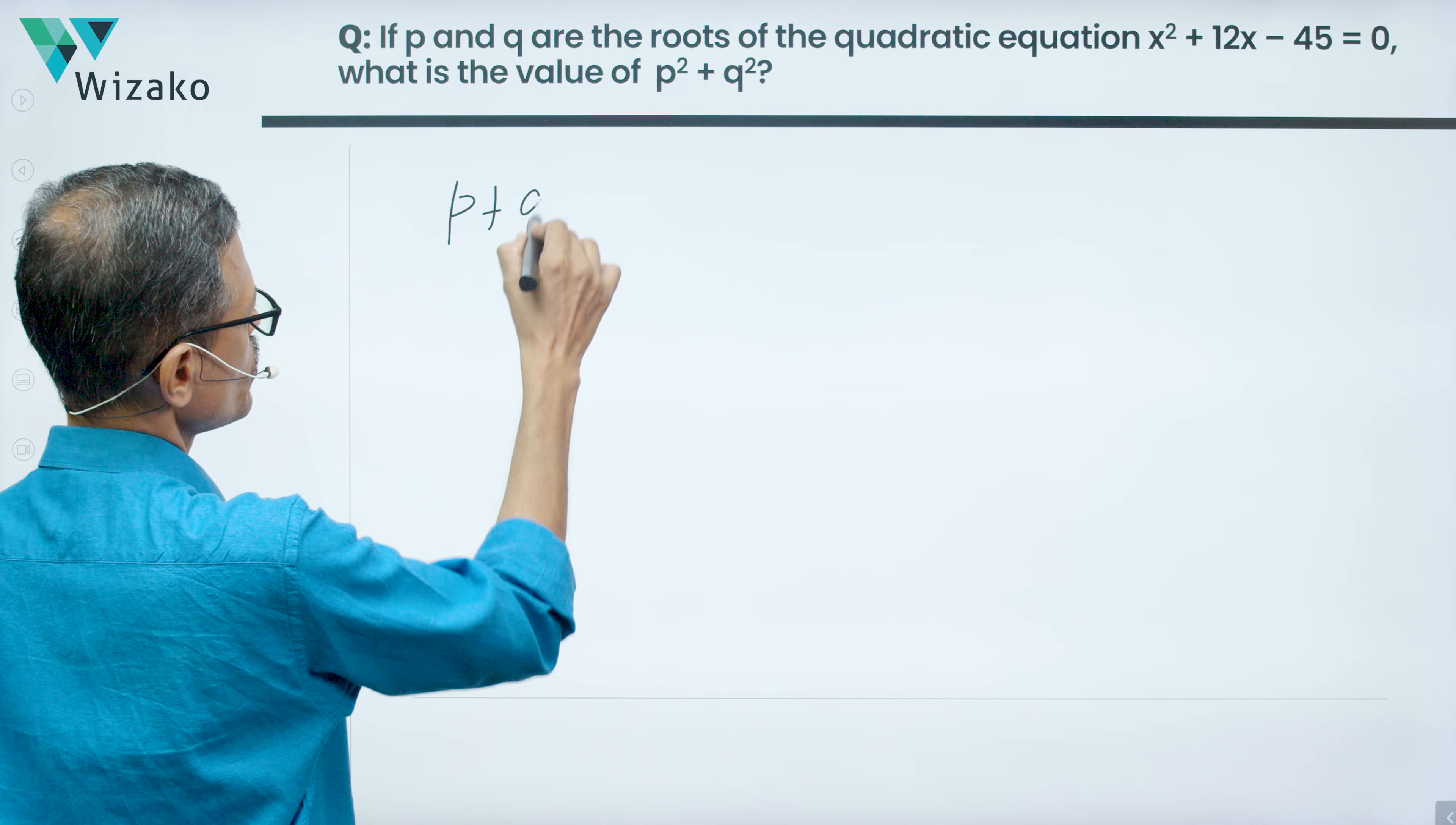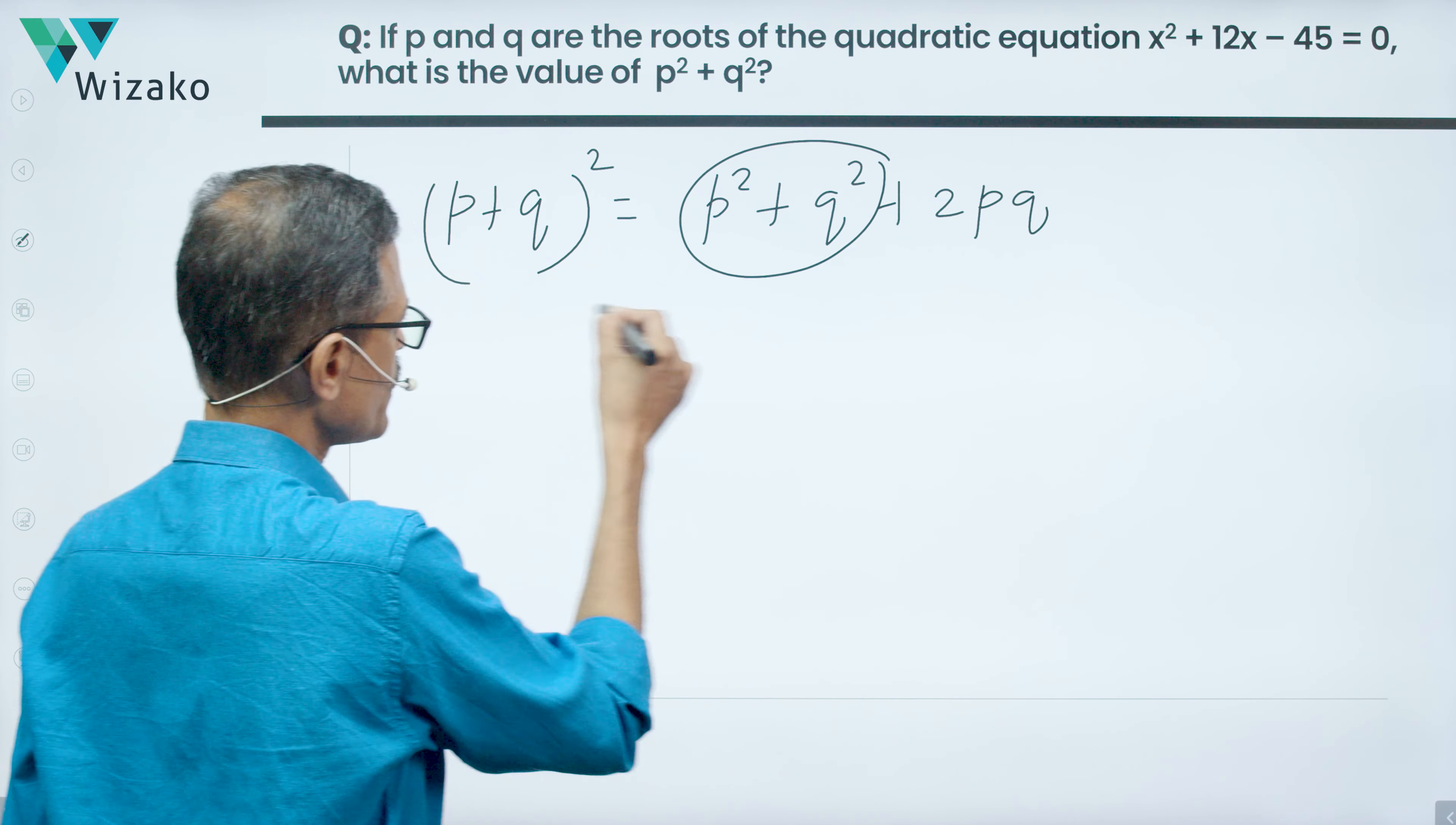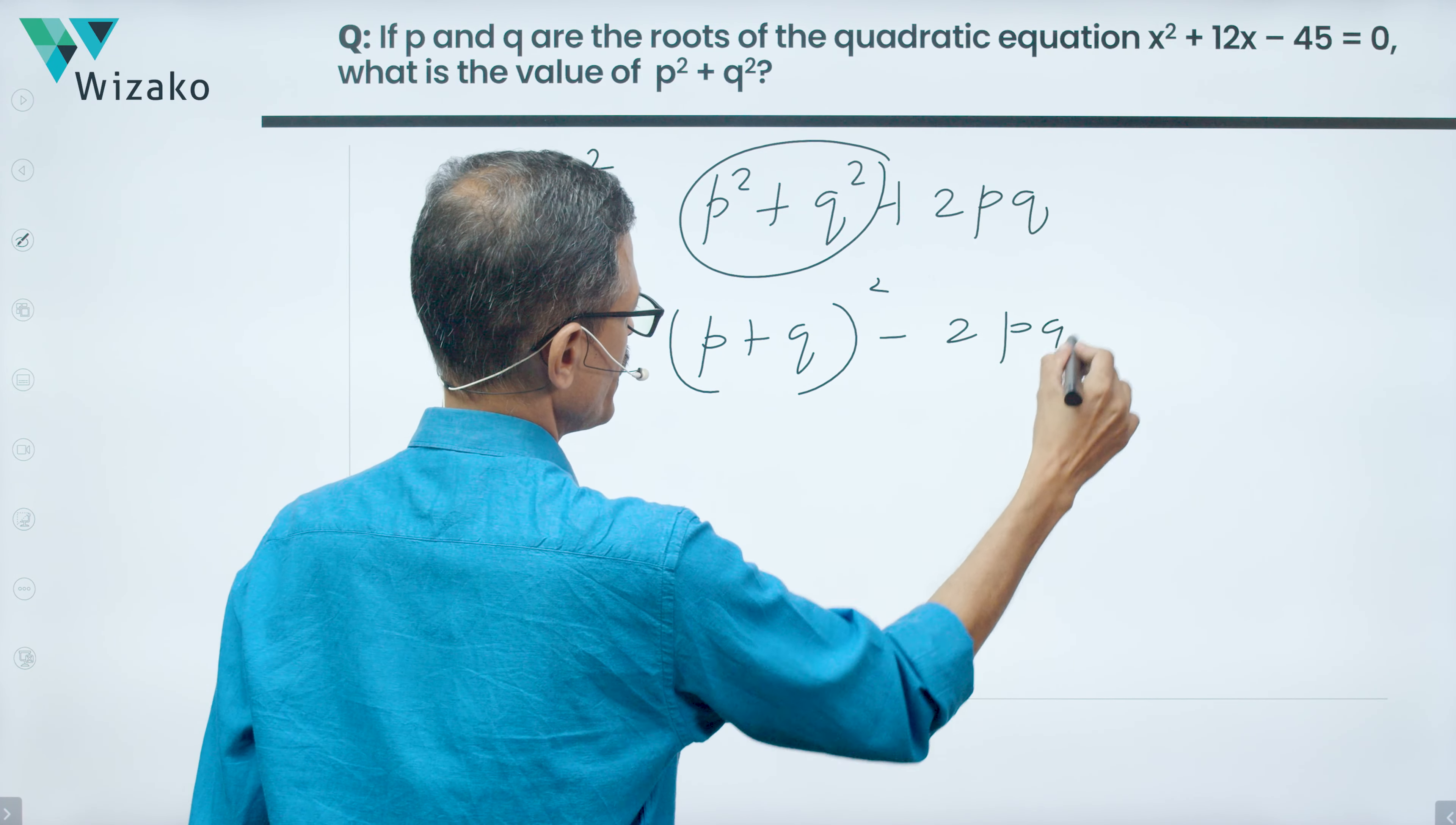Let's find out what is (p + q)² to start with, that is p² + q² + 2pq. We want just this part. So we'll rewrite it: p² + q² will therefore be equal to (p + q)² - 2pq.